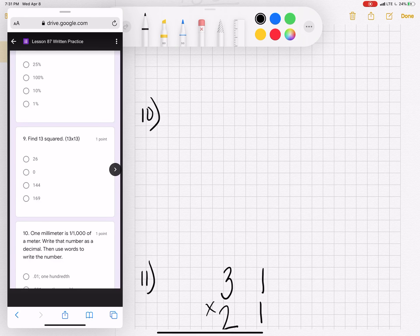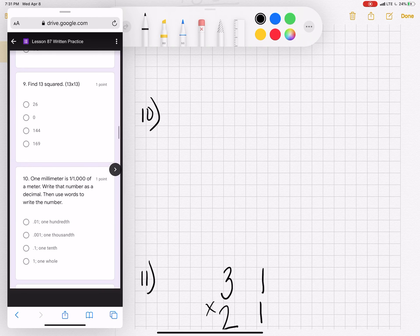Number 10. One millimeter is one one-thousandth of a meter. Write that number as a decimal. So I know if I have a decimal place, the first one is tenths, hundredths, and then thousandths. So I can write one with two zeros. This is one thousandth. Find that and select it for number 10.